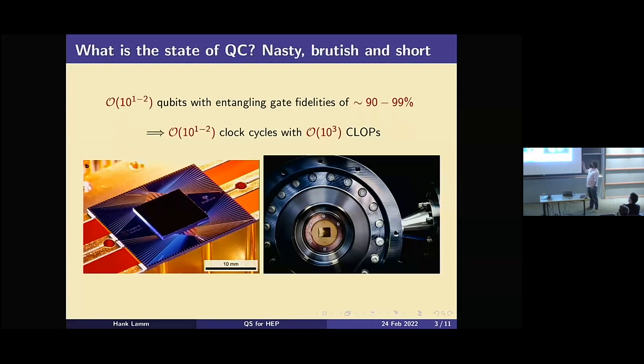So what is the current state of quantum computing today? It's depressingly nasty, brutish and short. We're talking about having tens to hundreds of qubits where our gate fidelities are only like 90 to 99%. And what this really turns into is that if you try and think about the comparison to classical computers we have today, we're talking about the ability to do something like 100 to 1000 clock cycles if we're lucky, and these things run on the order of thousands of them per second if you could really go that long. These are astronomically away from anything close to what classical computing can do today, in terms of the speeds at which we can do it.